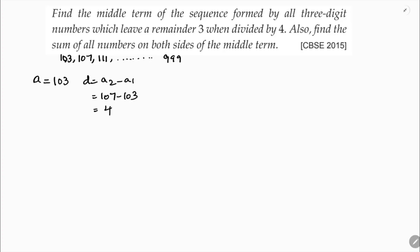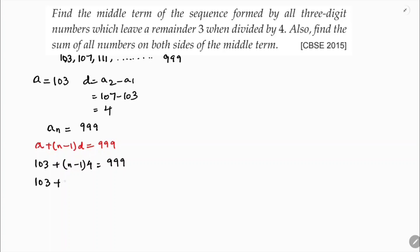Using the formula aₙ = a + (n−1)d = 999, substituting a = 103 and d = 4: 103 + (n−1)×4 = 999, which simplifies to 103 + 4n − 4 = 999, giving 99 + 4n = 999.